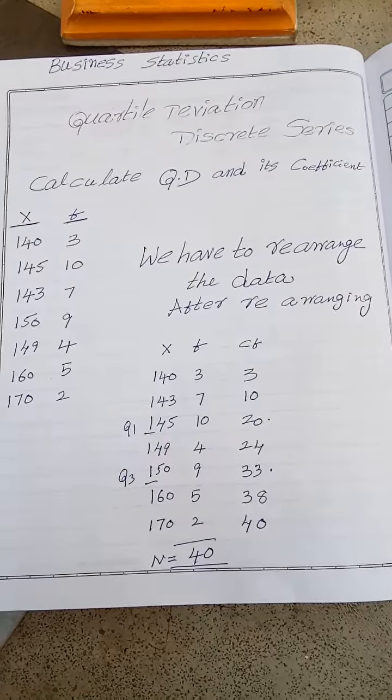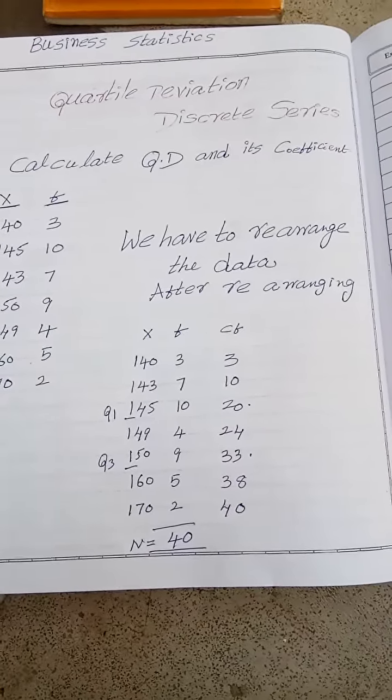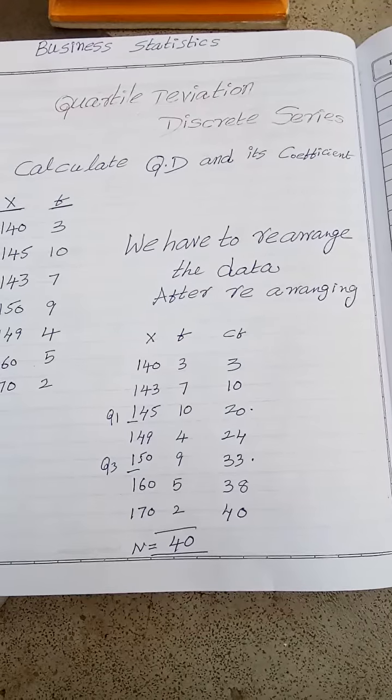How I know? First of all you have to see x. X corresponds to the number, so when it's not in order in case of x, then we have to rearrange the data. So after rearranging, I got like this.